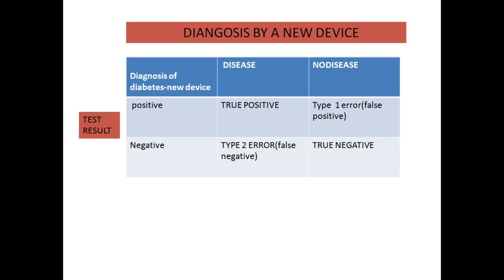We check a patient using the new device and it gives a positive result. We don't know whether the patient is actually diabetic because it's a very new device. On the second stage, we check with the gold standard device — an HbA1c detection method — and we get a negative result. This becomes a Type 1 error, or false positive error, because the new device gave a false confirmation of the disease when the patient is actually not diabetic.